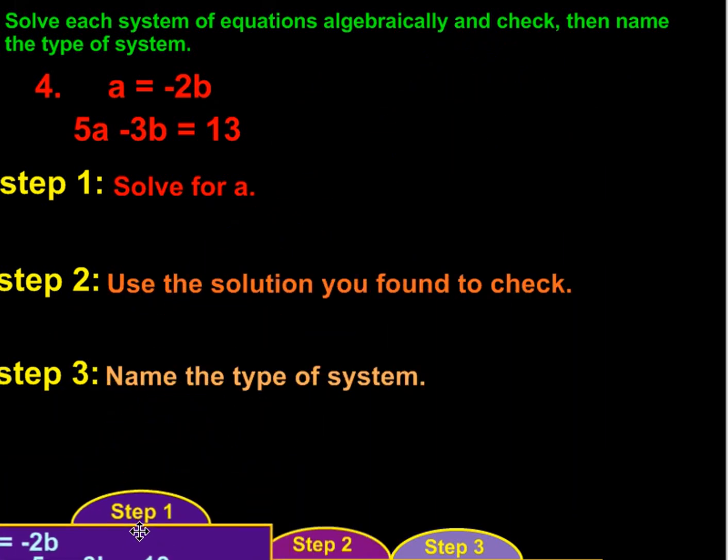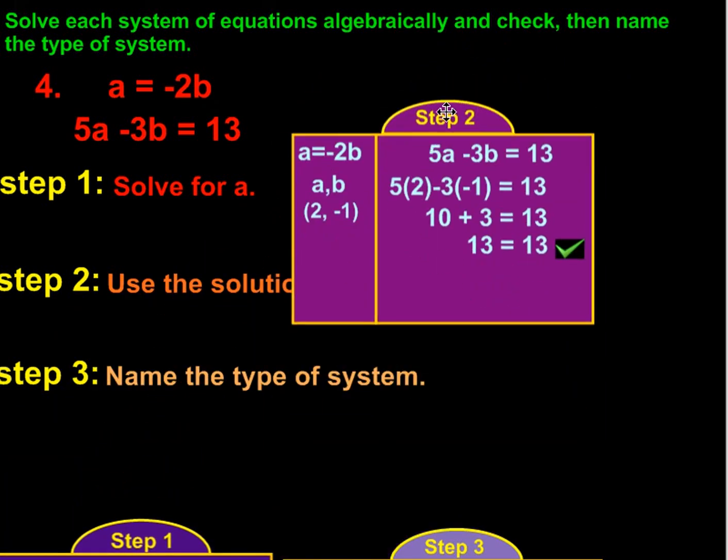And we can take that solution, and we can do a check. So, we have a equals negative 2b, ab being 2, negative 1. Take the original equation, 5a minus 3b equals 13. 5a is now 5 times 2. And negative 3 is now going to be multiplied by negative 1. So, 5 times 2 is 10. Negative 3 times negative 1 is positive 3. Still equals 13. And 10 plus 3 is 13, equals 13. Our check works.